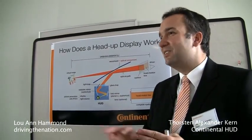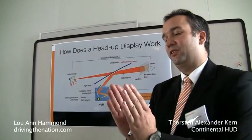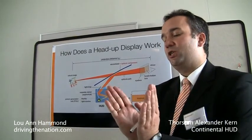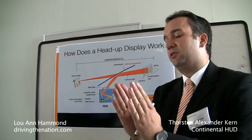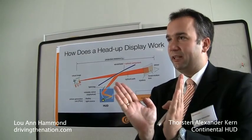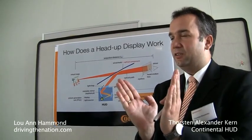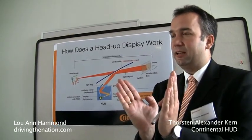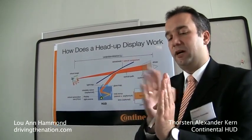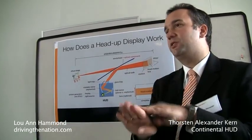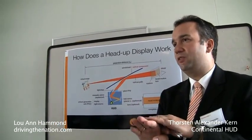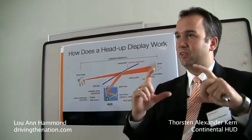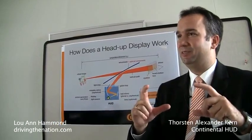You want to have a single image and not a double image — you don't want a ghost image. Exactly. And as a consequence, the windshield has a wedge angle. Both pieces of glass are angled like that, and this wedge angle allows the outer reflection to match the inner reflection. As a consequence, you see just one single picture.